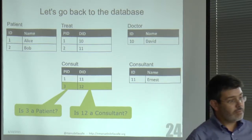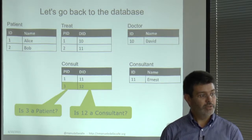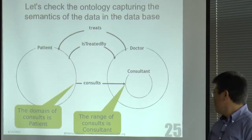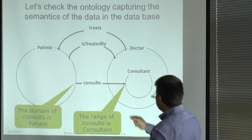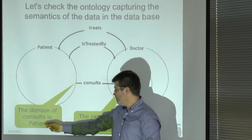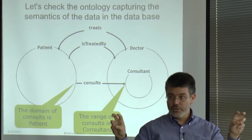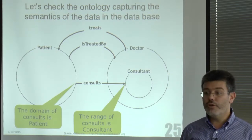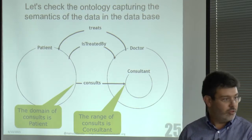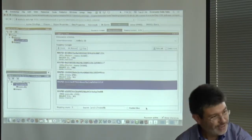The reason it works is that we explicitly stated that the domain of 'consults' is patient and the range is consultant. If you take those two axioms away from the ontology, the derivation will not happen. With those axioms in the ontology, the reasoner does the derivation. We can try removing them to verify.